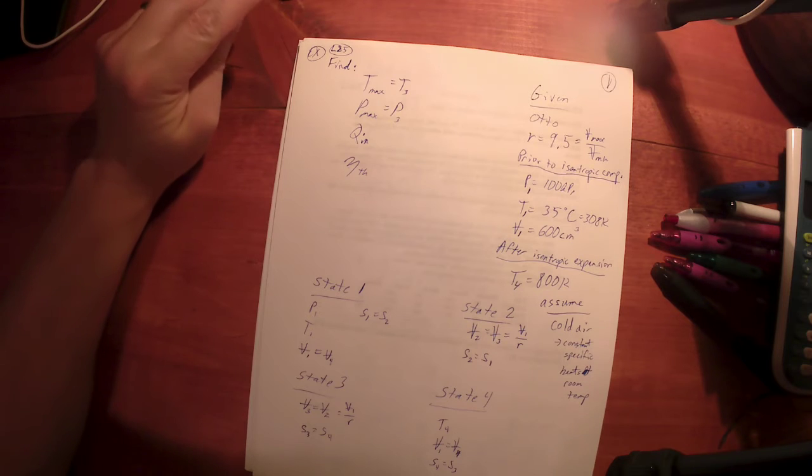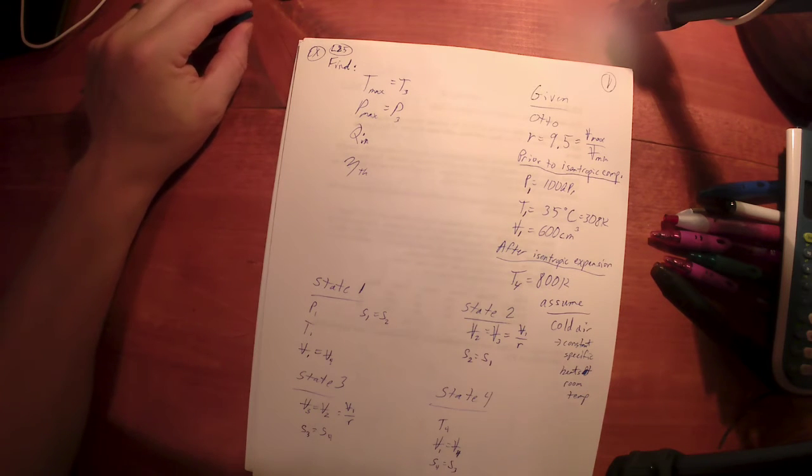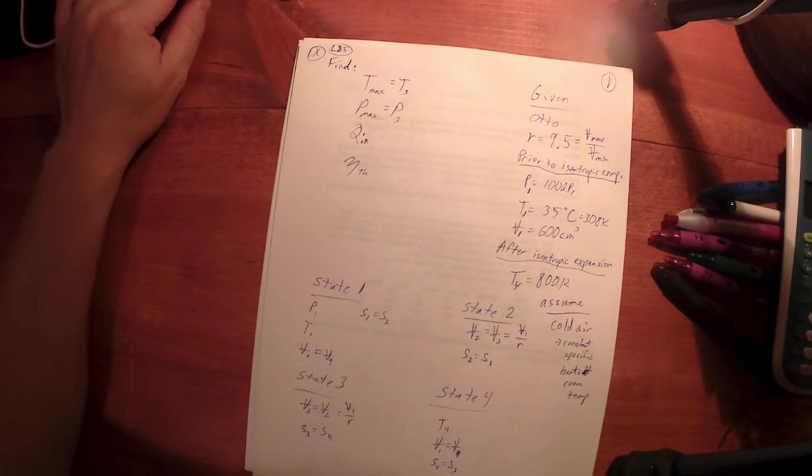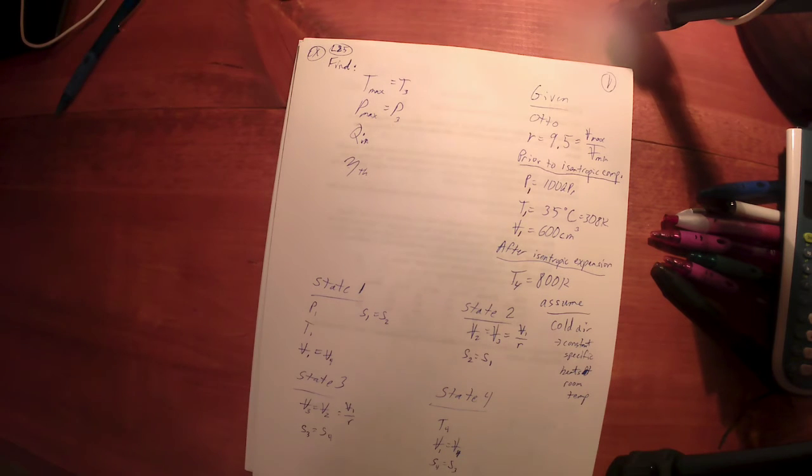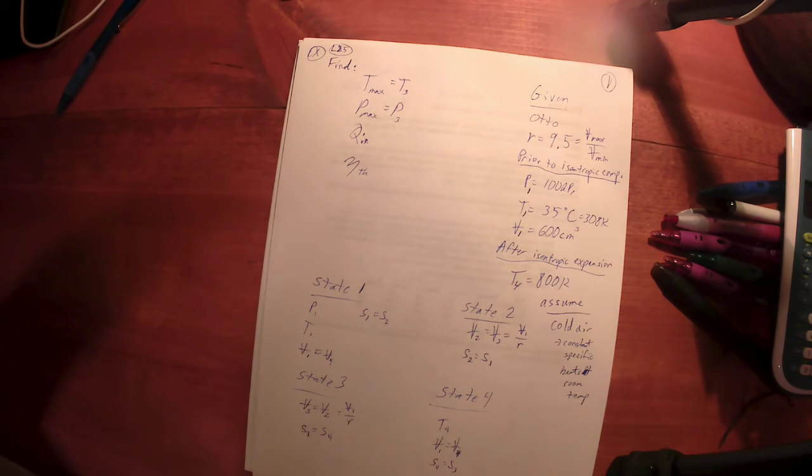And as long as you know your way around the cycle, you could probably do it very quickly. And often that's what happens is if you know your way around these problems, the problem that I assign on the exam is normally not too big of a challenge. Okay, so do be prepared for an Otto cycle problem on the exam, on the final.